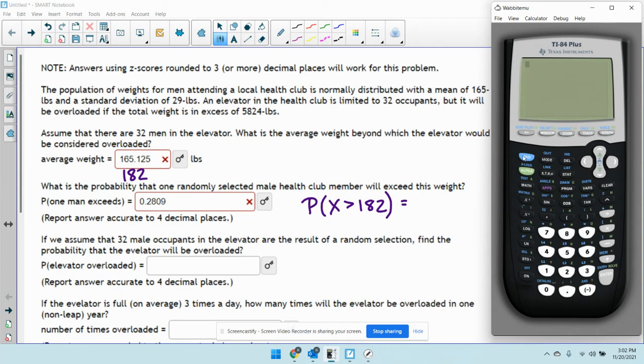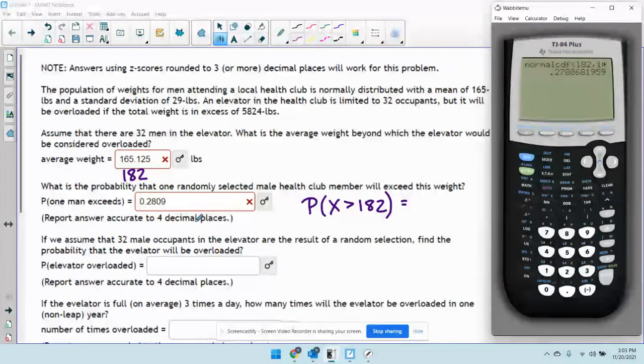Well, I'm going to use the normal distribution. So, that's going to be second distribution, normal CDF. The lower bound is going to be 182. Upper bound is going to be some big number because we're talking about greater than 182. So, the mean will be 165 and the standard deviation is 29. So, the chance that a randomly selected person will be heavier than that is 0.2789.